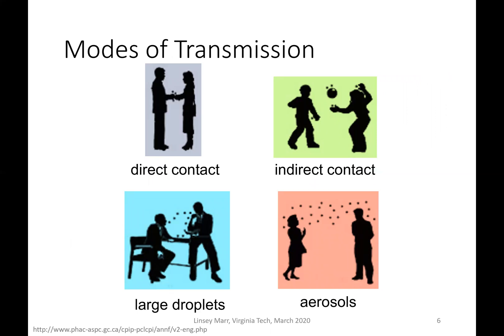Depending on who you talk to, there are either two to four different modes of transmission — sometimes these are lumped together. There is direct contact, where you shake someone's hand, pick up a virus, and then touch your eyes, nose, or mouth. There's also indirect contact involving some object such as a ball, door handle, or table, where the sick person touches the object and deposits virus there, and then you pick up that virus and inoculate yourself by touching your eyes, nose, or mouth. Those objects are called fomites.